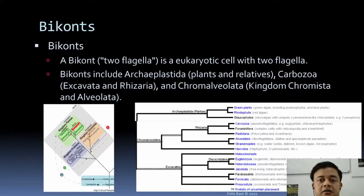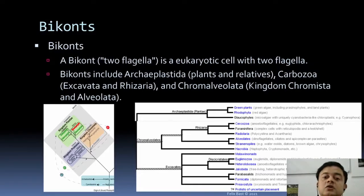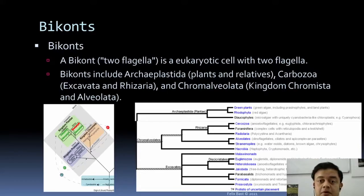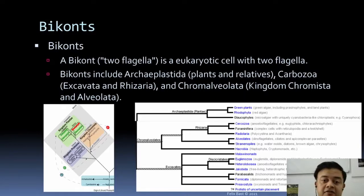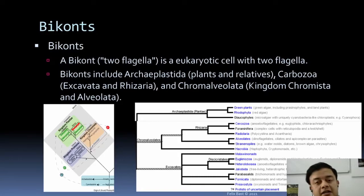Bicont — 'cont' means flagella in Latin — is a eukaryotic cell with two flagella at least in the motile phase; the ancestral trait is having two flagella. It's a generalization, as not all have flagella or a motile phase — for example, red algae, which is part of Archiplastida, has no motile phase; the gametes are non-motile and non-flagellate. But still the ancestral character is two flagella. Biconts include Archiplastida, which includes plants and relatives including red algae.